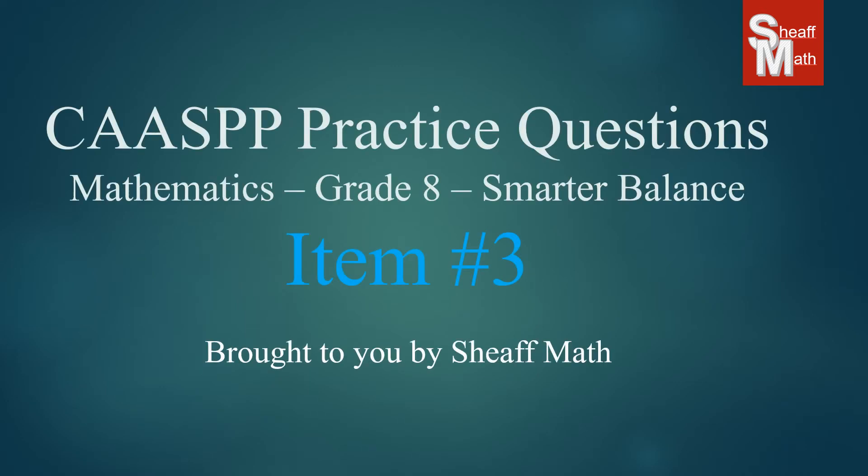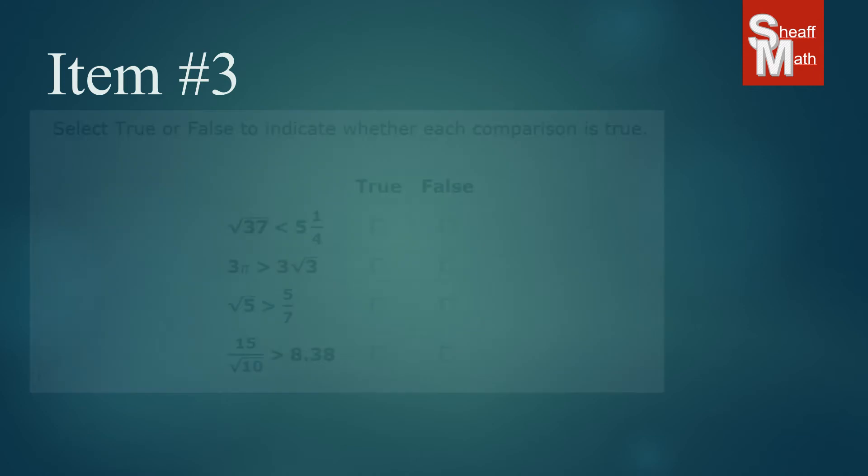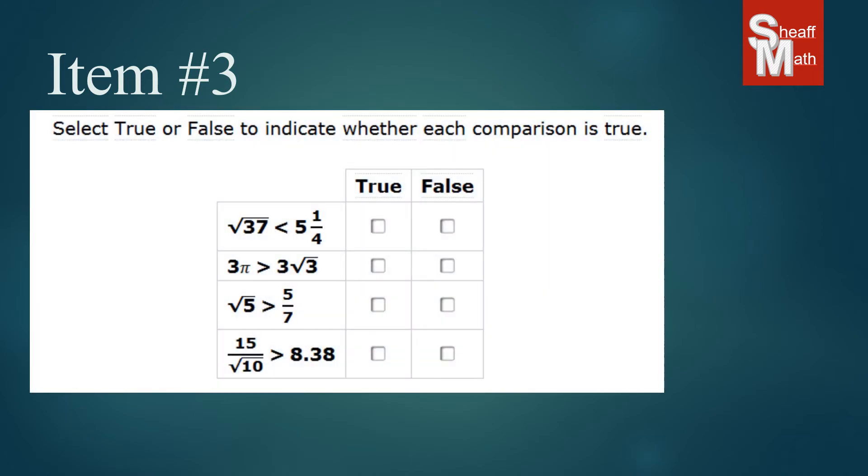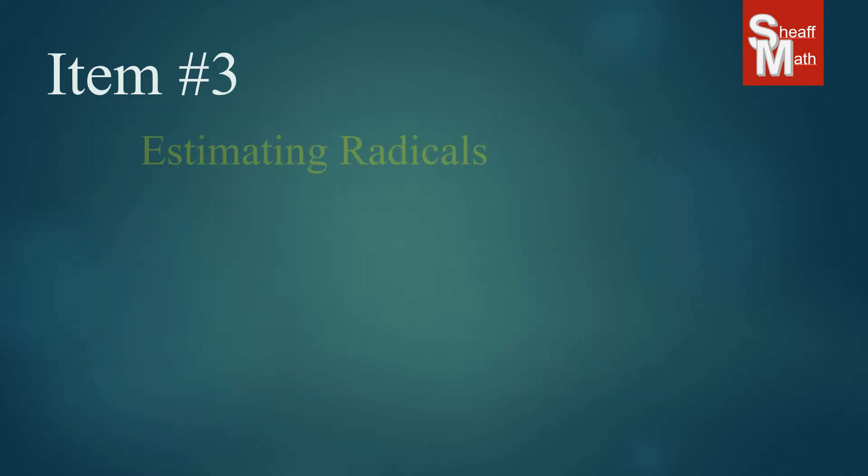CASB practice test item number three. On this particular question we actually have four questions in one. What it's asking us to do is find out whether these inequality statements are true or false, so we're gonna have to do four different problems. Now normally inequality statements aren't that hard to solve unless we have these square roots here, and you might not be able to use a calculator on these tests. So what I'm going to teach you right now before we solve these is how to estimate a radical that isn't a perfect square.